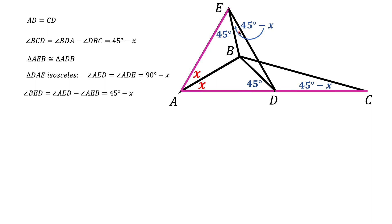But now look what's happening. We have triangle BED and triangle BCD. They both share the same side BD and the angles that are opposite of this side BD, both of them are 45 minus X. They're both congruent.